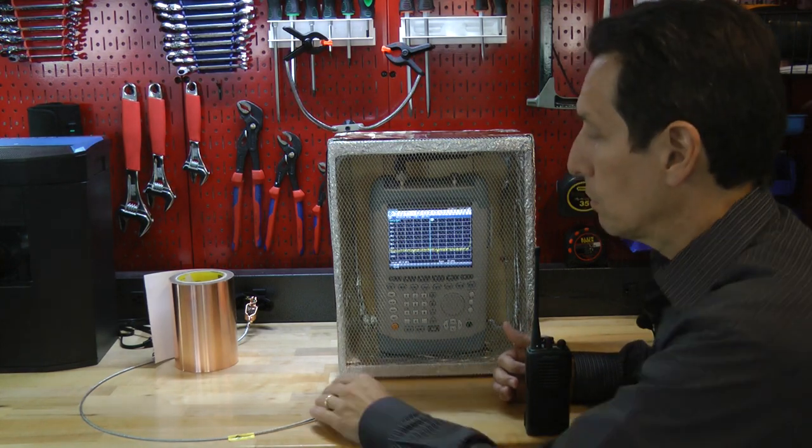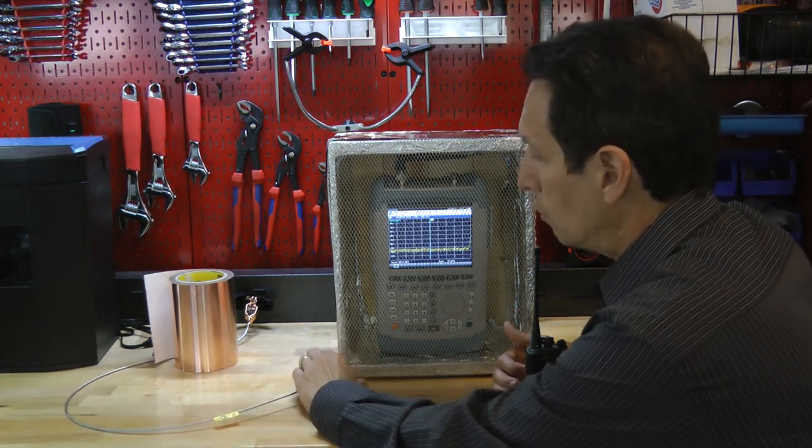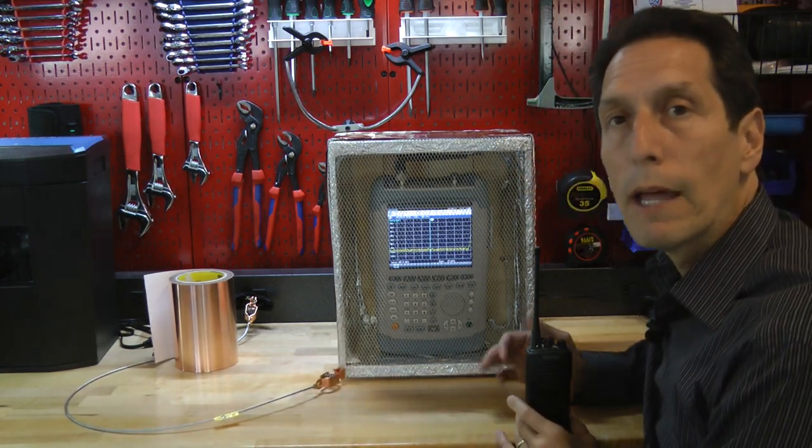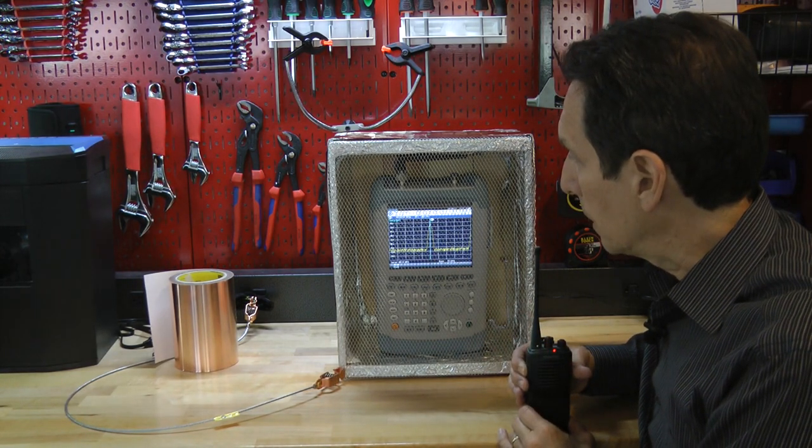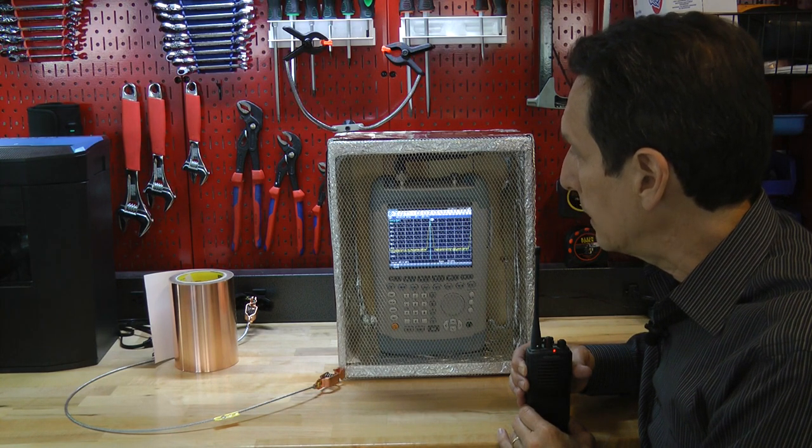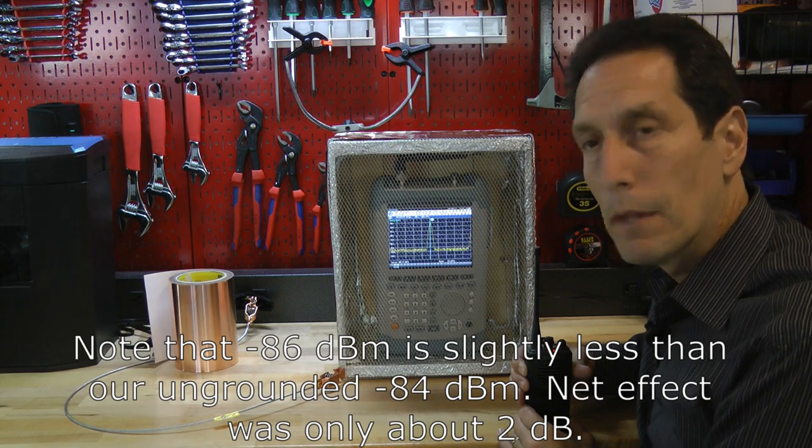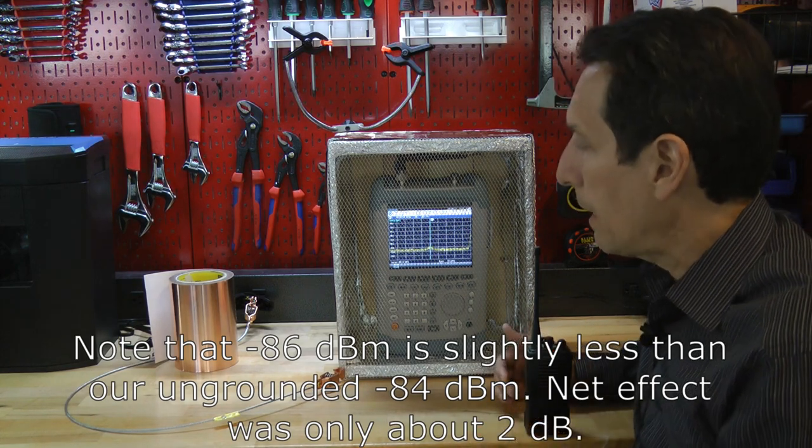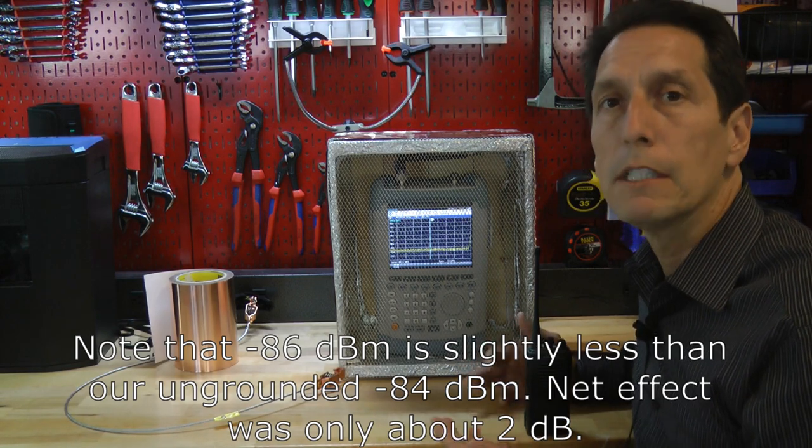Now, what we're going to do is we're just going to simply take the ground connection, attach it to the Faraday cage, and we're going to repeat the experiment without changing anything. Here we go. Let it come up. And what we see is that the level is about minus 86 or maybe 86 and a half dBm. So, the net effect of grounding it was only about maybe 2 dB. Very small net effect.